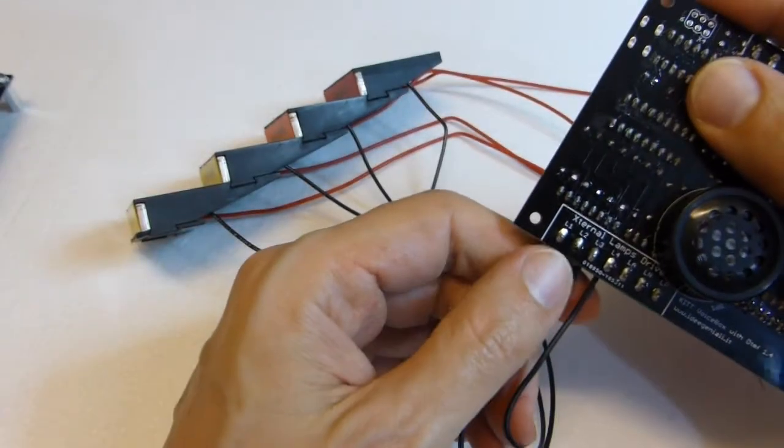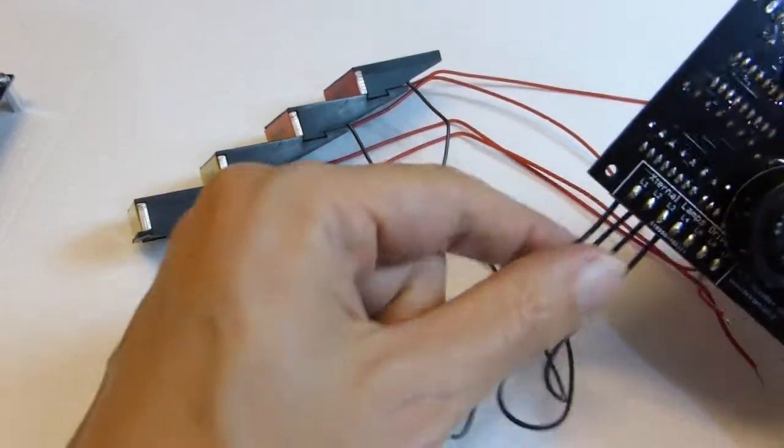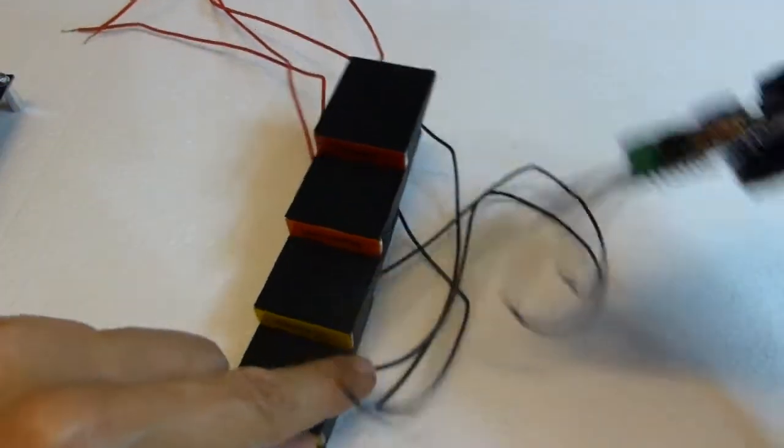So we have L1, L2, L3, L4. This is switched GND external lamp drive outputs. There we go, the black wires of the countdown.